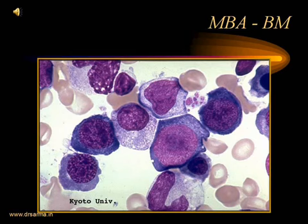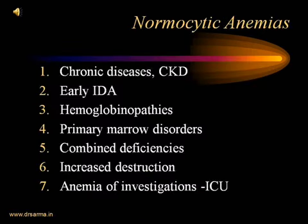This picture shows the bone marrow in a case of megaloblastic anemia. The RBC precursors are very gigantic in size — called megaloblasts. The cytoplasm is blue with coarse dots, the nuclei are very big, and the nuclear-cytoplasmic ratio is increased. We have now seen microcytic hypochromic anemias, macrocytic megaloblastic anemias, and macrocytic non-megaloblastic anemias.